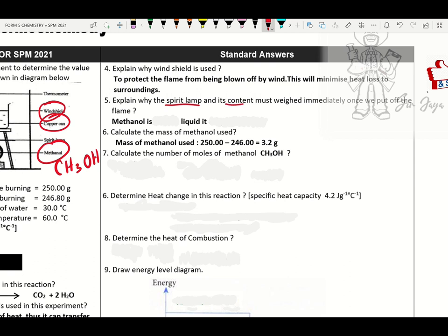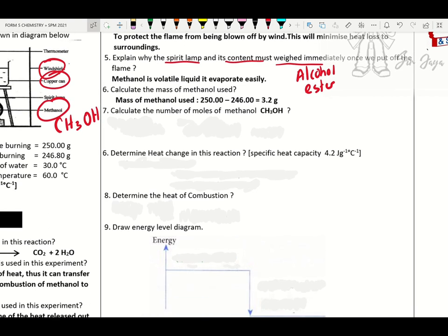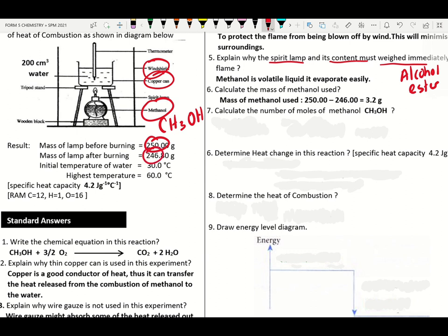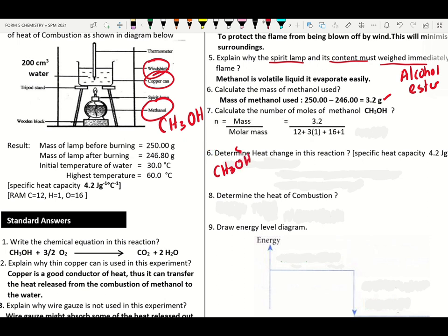Why is the spirit lamp and its content weighed immediately? Alcohol and ester are volatile liquids and can evaporate easily. Calculate the mass of methanol used: 250 − 246.80 = 2.0 g (before and after burning). Number of moles: n = mass ÷ molar mass. Use the molar mass of CH₃OH. The number of moles will be approximately 0.1.